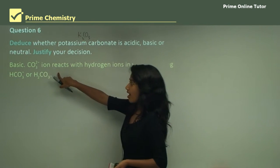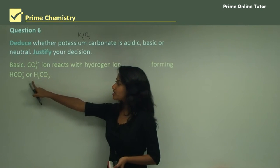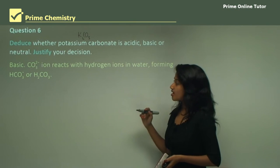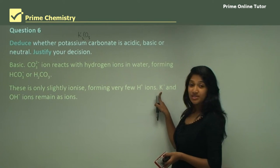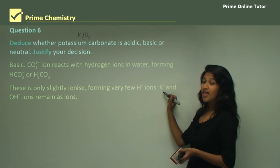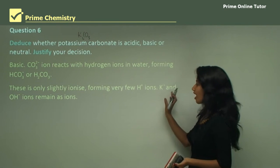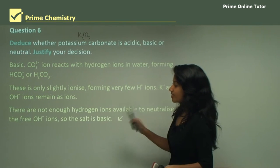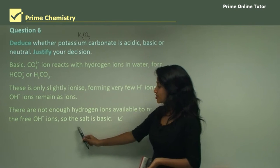The carbonate ion reacts with hydrogen ions in water forming hydrogen carbonate or carbonic acid — a weak acid that is only slightly ionized, forming very few hydrogen ions. The potassium ions and hydroxide ions remain as ions because potassium hydroxide is a strong base that readily re-ionizes. There are not enough hydrogen ions to neutralize the free hydroxide ions, so the salt is basic.